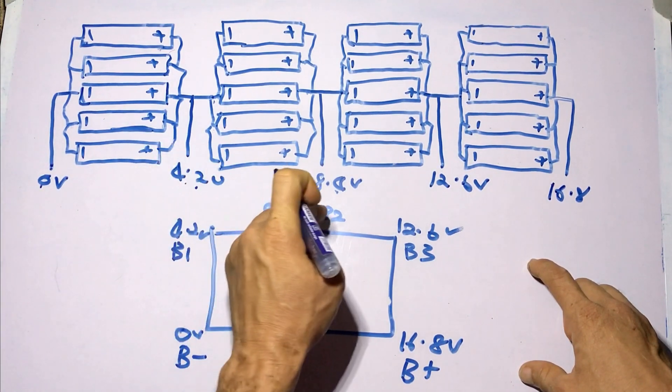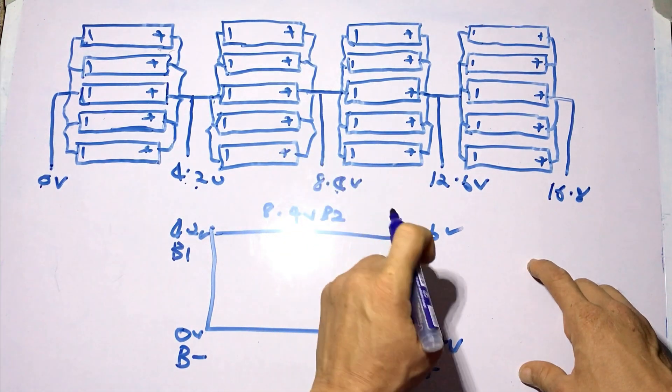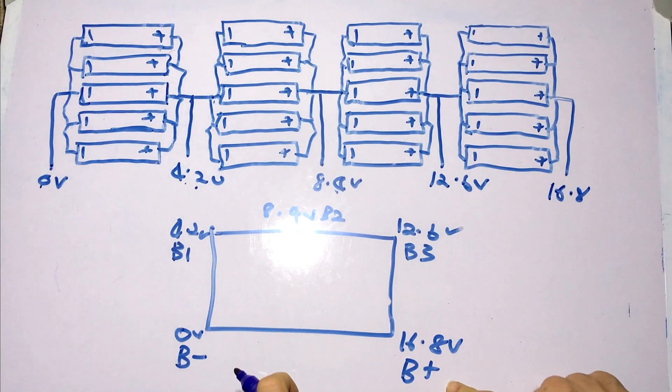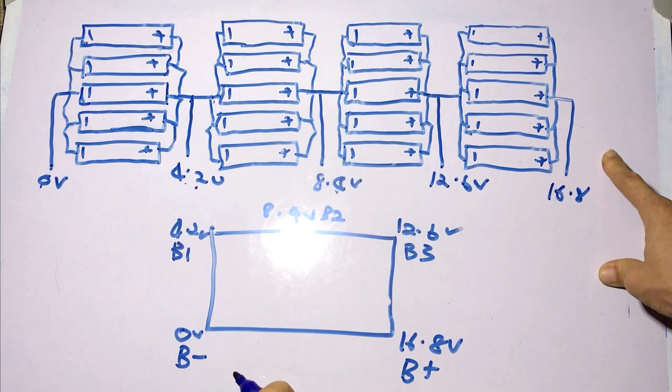Your B1 is your 4.2 volts, your B2 is your 8.4 volts, your B3 is 12.6 volts, and the B plus is your 16.8 volts.